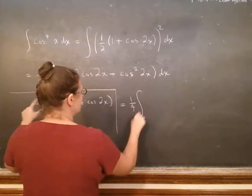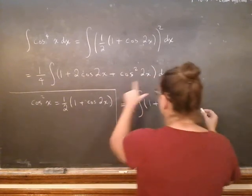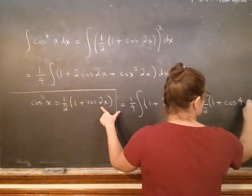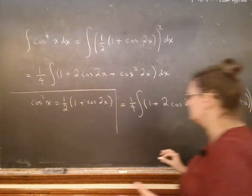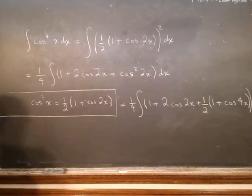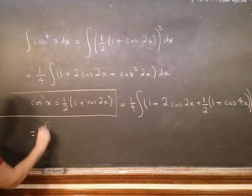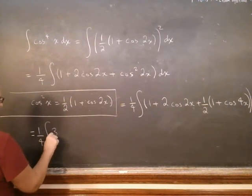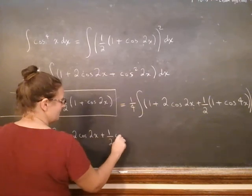I'm going to use this formula, but because my argument is 2x, this changes to 4x. Now I can clean this up. So the 1/2 goes through, and I've got 1 plus 1/2, which gives me 3/2 plus 2 cosine 2x plus 1/2 cosine 4x.